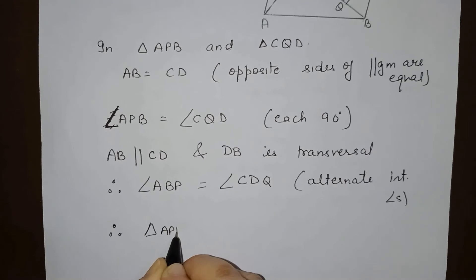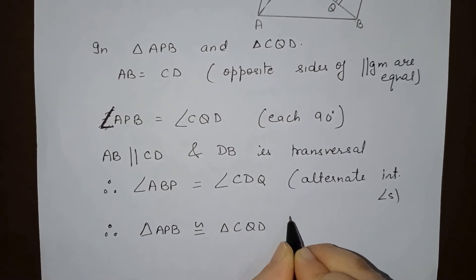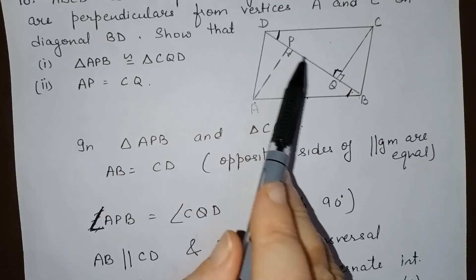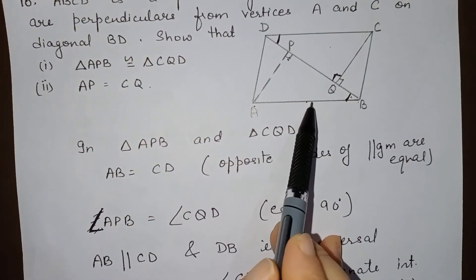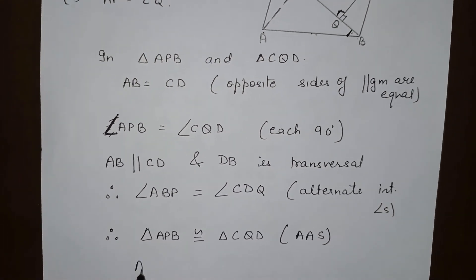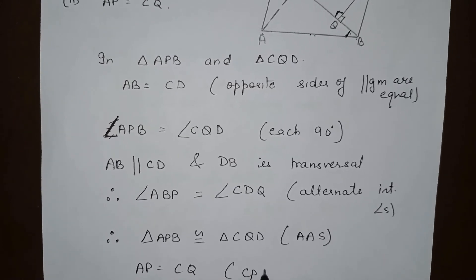Therefore triangle APB is congruent to triangle CQD by AAS, angle-angle-side. So we have AP is equal to CQ by CPCT.